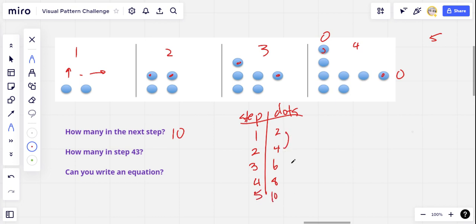You can probably see that the difference between each step is going to be the same here. Four minus two is two, six minus four is two, eight minus six is two, ten minus eight is two. When you get that constant in the differences, you know it's linear.